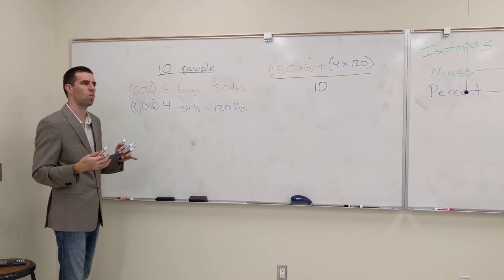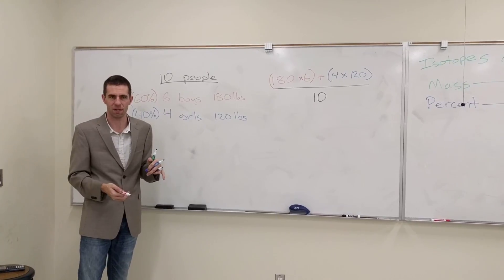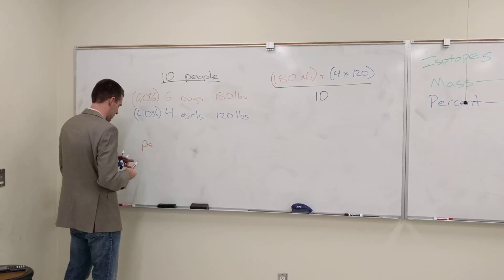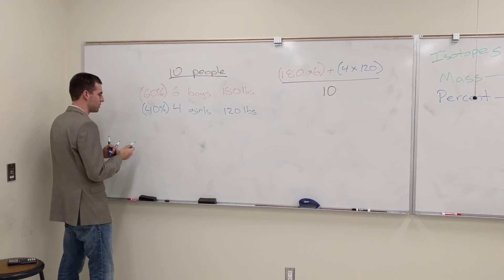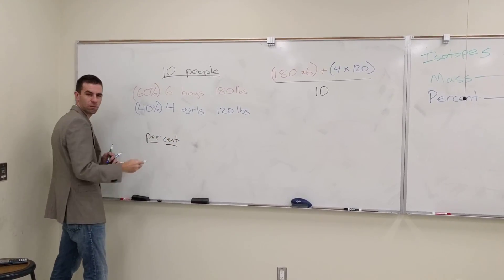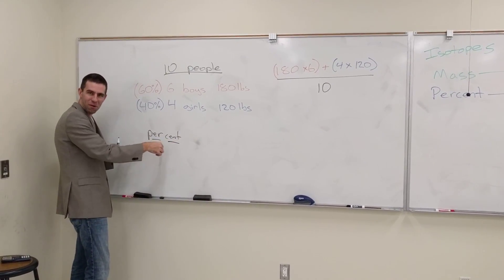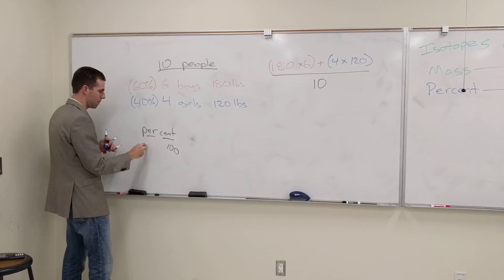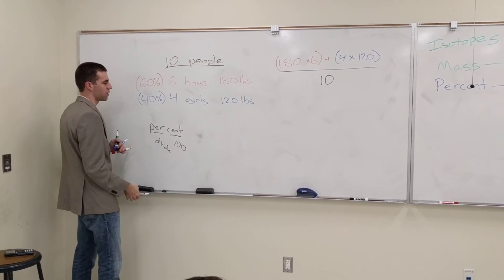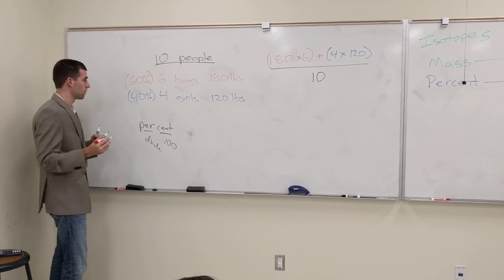For 60%, what does that really mean? Percent. What does percent mean? Per cent. Per means for every 100. Century, this is 100. And by the way, per means divide. So this means over 100. So what is 60 over 100? 0.6. What is 40%? 0.4.